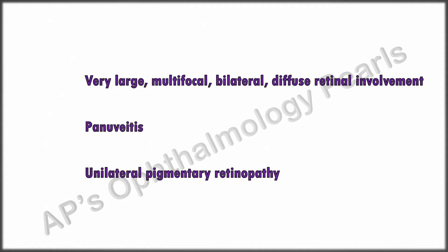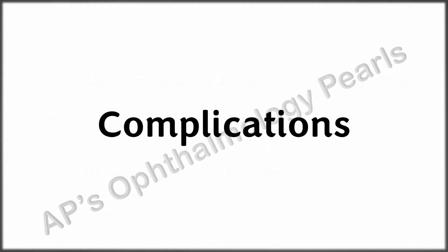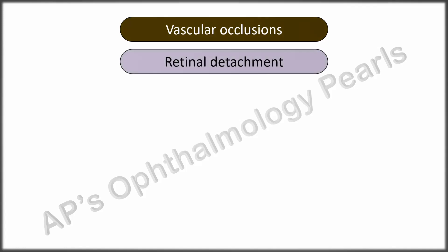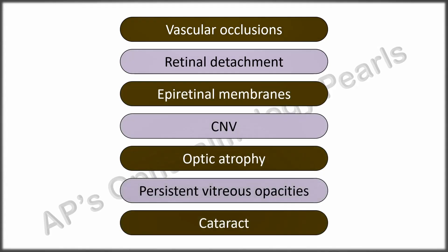Other atypical features include very large multifocal bilateral diffuse retinal involvement, panuveitis, and unilateral pigmentary retinopathy. The most severe retinal lesions may be seen in patients receiving steroids without concomitant antiparasitic therapy. Vascular occlusions usually occur in areas where vessels pass through an area of retinitis, and retinal detachment may be either rhegmatogenous or tractional.